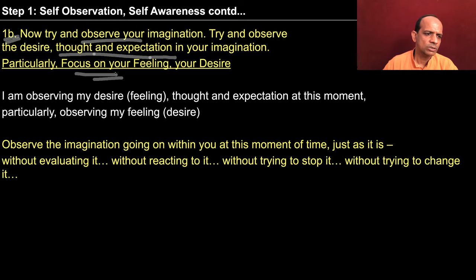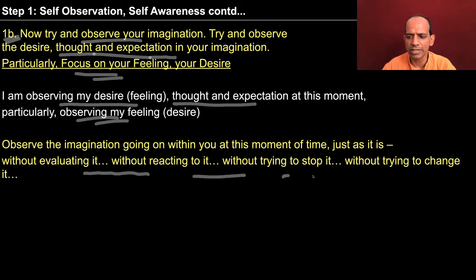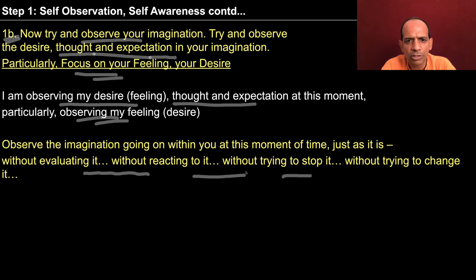Gradually you have to come to the stage when you are able to observe your feeling — your desire — and also your thought and expectation. Observe the imagination going on within you at this moment just as it is, without evaluating it, reacting to it, or trying to stop or change it. If you are not able to do this to begin with, start by observing your object of attention, then your thought, then deduce the feeling that was motivating that thought.